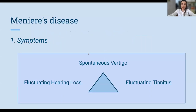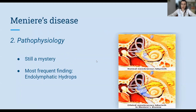Let me start with some information on Meniere's disease. The triad of clinical symptoms characterizing the syndrome consists of spontaneous vertigo, fluctuating hearing loss, and tinnitus. The precise cause of Meniere's disease is still unclear. The most common suggested etiology is endolymphatic hydrops, which essentially means increased fluid in the inner ear, and can be observed at the bottom panel of this image.